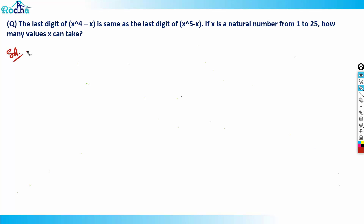Let's look at the next question. It says: x⁴ - x has the same last digit as x⁵ - x. If x is a natural number from 1 to 25, how many values can x take? Try this question for five minutes, pause the video, and then see the solution.